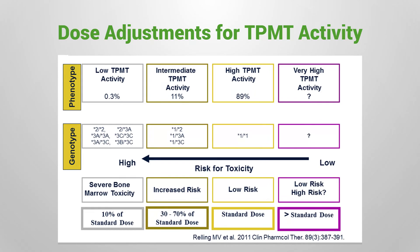Dose adjustments for thiopurine drugs are based on either TPMT enzyme activity or genotype. Consequently, it is important to assess TPMT activity or genotype prior to drug administration.